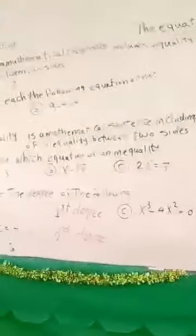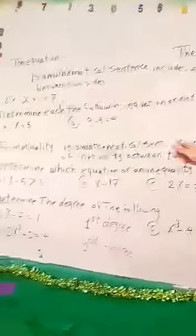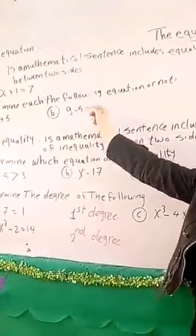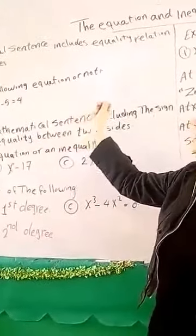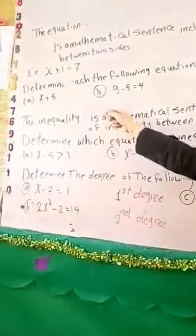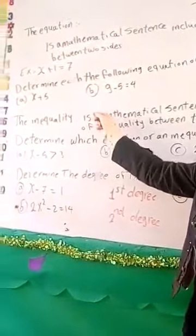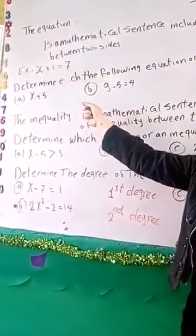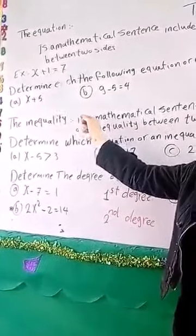What is the name of an equation? The equation is a mathematical statement including an equality relation between two sides. As an example, x plus 1 equals 7 — we have an equality on both sides.